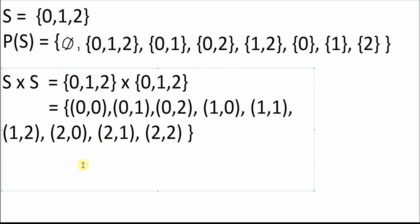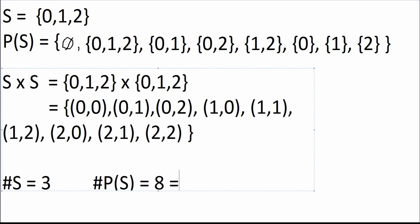The final topic is cardinality. The cardinality of S is simply the number of elements in the set — for S it's three. The cardinality of the power set P(S): you can count them and see there are eight elements. More mathematically, the cardinality of a power set is two raised to the power of the cardinality of the original set — so two to the three gives you eight.